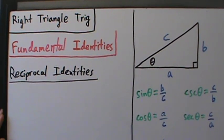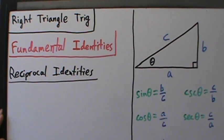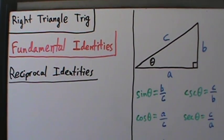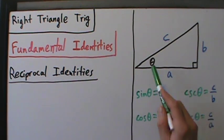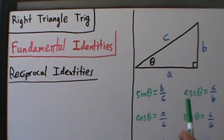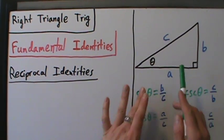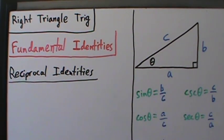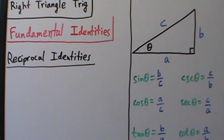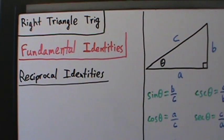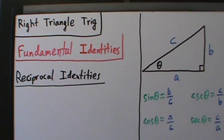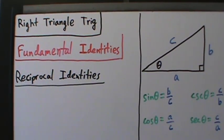In the last video we defined the six trigonometric functions of an acute angle theta — the six trig functions in a right triangle. Now what we're going to do is talk about the relationships between them.